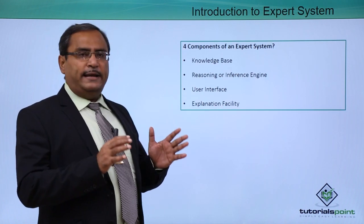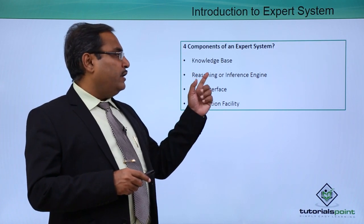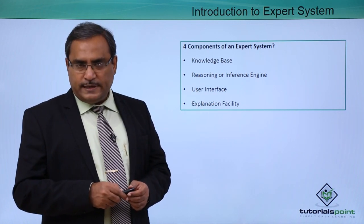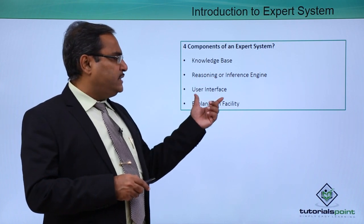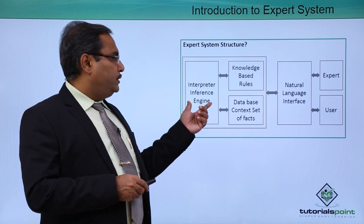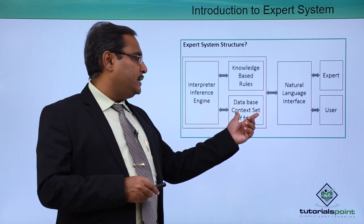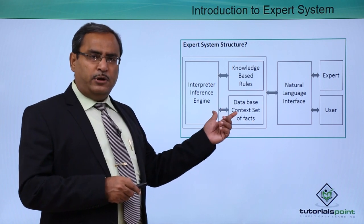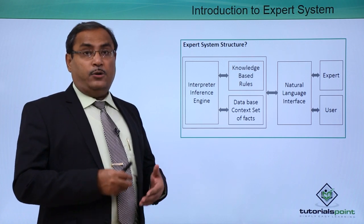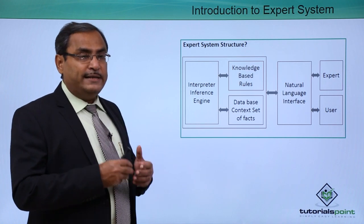There are four components of an expert system: knowledge base, reasoning or inference engine, user interface, and explanation facility. Looking at the diagram, we have an interpreted inference engine, knowledge base rules, and a database as the context set of facts. Whenever we have facts denoting data, we call it a database, and whenever we have rules containing if-then parts, we consider them as a knowledge base.